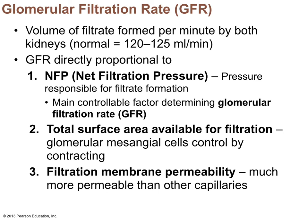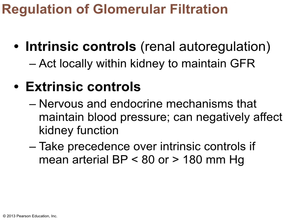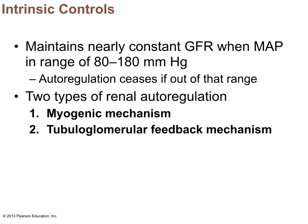There are two types of GFR control mechanisms. Renal autoregulation is intrinsic — it acts within the kidney. Extrinsic controls recruit the nervous system and hormones. The intrinsic controls are active when mean arterial pressure is between 80 and 180 mmHg. When pressure goes outside that range — below 80 or above 180 — extrinsic controls kick in to regulate GFR.